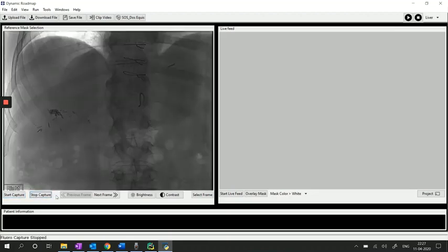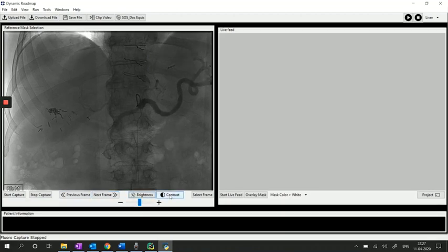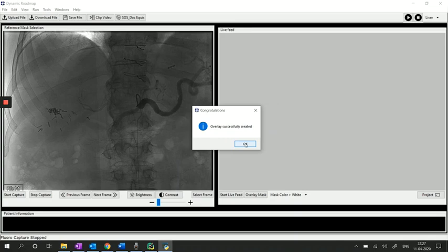The software then cuts the video into successive frames which you can navigate back and forth to select the best frame. You can also toggle the brightness and contrast of the chosen frame and then hit the select frame button. Our software then processes the frames and creates an arterial roadmap from it.